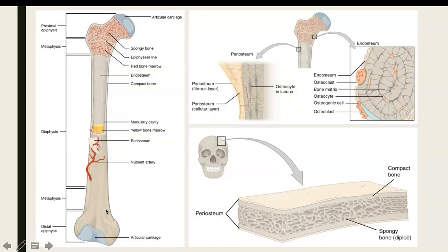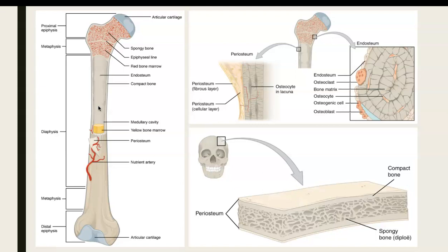So what I'm going to be doing is looking at the external and internal gross anatomy of the humerus here as an example of a long bone. Any bone you would look at long-bone-wise would look pretty much the same, whether you're looking at a phalange, a metacarpal, a metatarsal, whether that be a tibia, a fibula, whether that be the femur, the humerus, the radius, the ulna — any of the long bones will have the same kind of features.